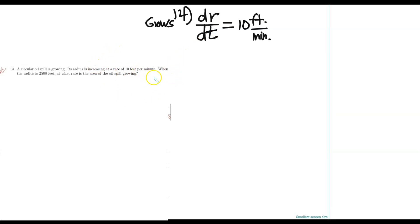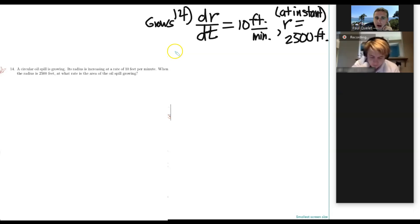So there we go. 10 feet per minute. When the radius is 2,500 feet, so r equals 2,500 feet at some instant of time. So there's going to be some instant. And an instant of time, the radius is 2,500 feet. We want to know at what rate is the area of the oil spill growing. The rate at which the area of the oil spill is growing could be characterized by what sort of a derivative? dA/dt.